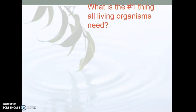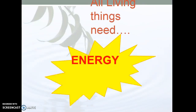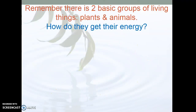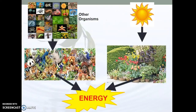So what is the number one thing all living organisms need? Energy. So there's two basic groups of living things: plants and animals. How do they get that energy? Some animals usually eat other things, and plants usually get their energy from the sun.